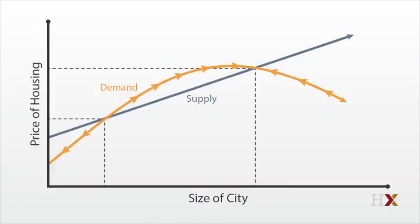So, as you can see, supply and demand cross twice. Which of these is the equilibrium? Actually, there are three possible equilibria here. The first equilibrium involves zero people in the city. When no one is in the city, the cost of construction exceeds the willingness to pay. No one is going to build any housing, and no one wants them to. This is a perfectly reasonable equilibrium outcome that reflects the vast parts of the globe where no one has built a city. Then, there are the two other points, both of which deserve to be called equilibrium. But one of them, the lower crossing point, isn't really a stable equilibrium.